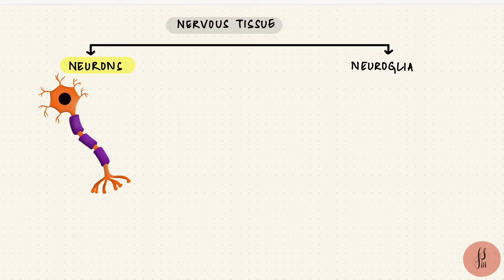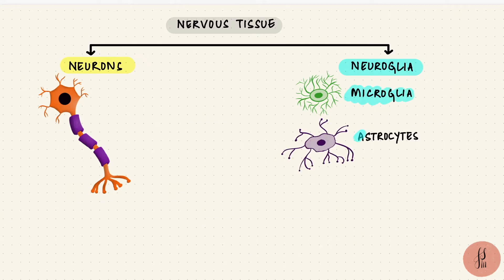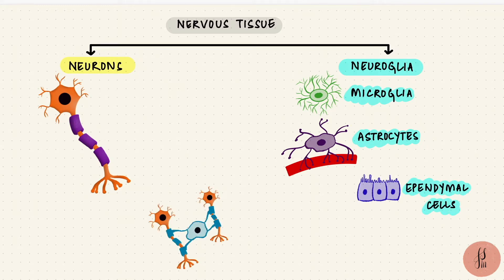These are supportive cells that include cells like microglia, which are like macrophages, astrocytes, which have many functions including forming the blood-brain barrier, ependymal cells, which line the ventricles of the brain, oligodendrocytes, and in the peripheral nervous system there are also Schwann cells.